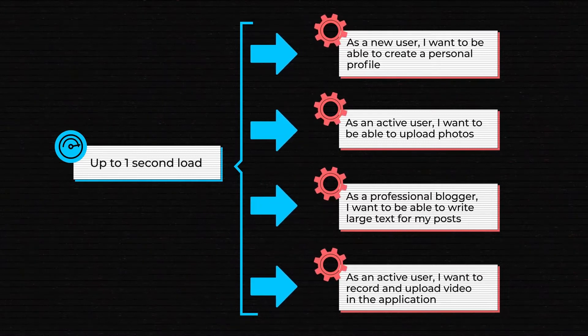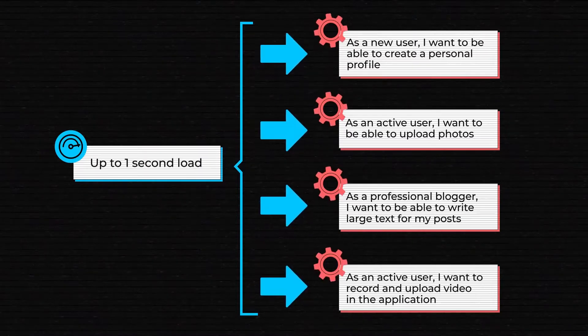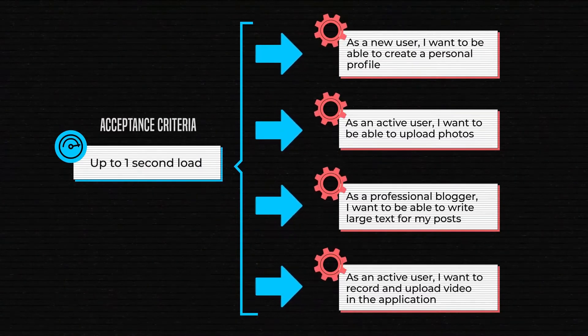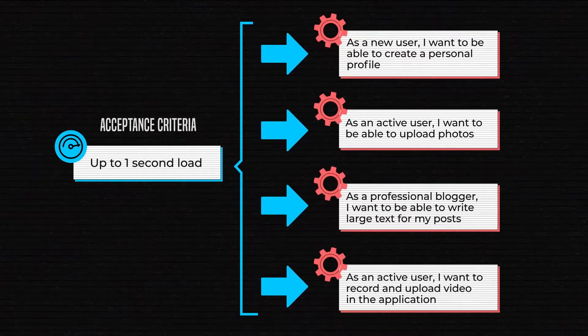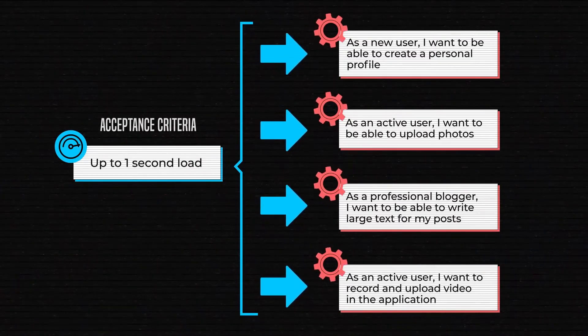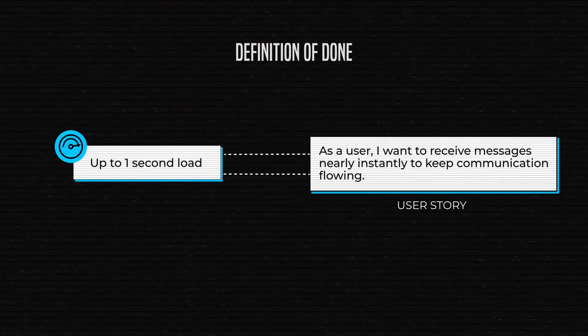In this case, a non-functional requirement would affect all functional requirements. So, it makes sense for us to document this as acceptance criteria for those four features, because the desired response time will determine if a given feature is completed and behaves the way we want. In software documentation, non-functional requirements can often be seen in a definition of done section, linked to the user stories it will affect.